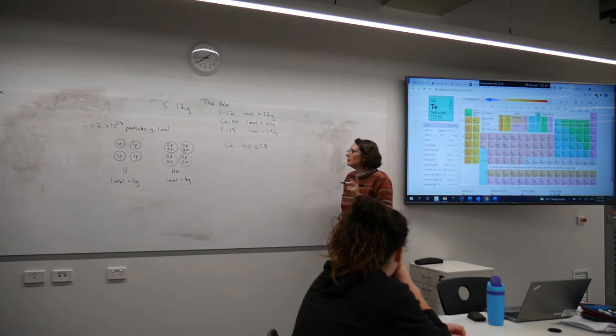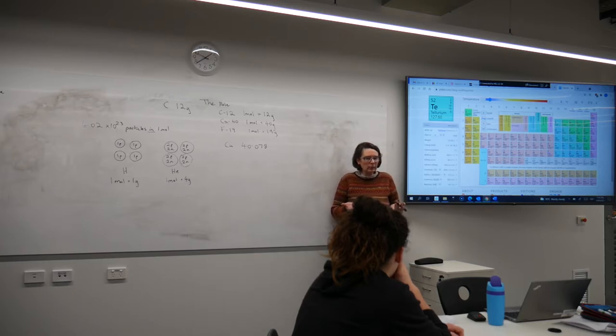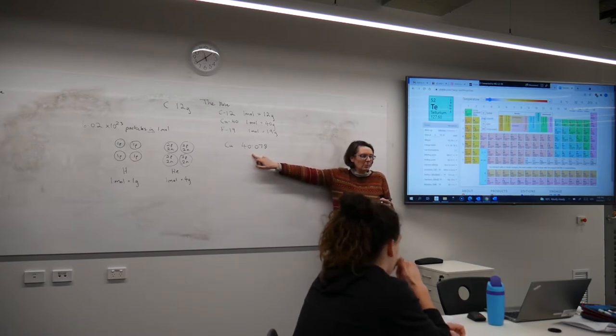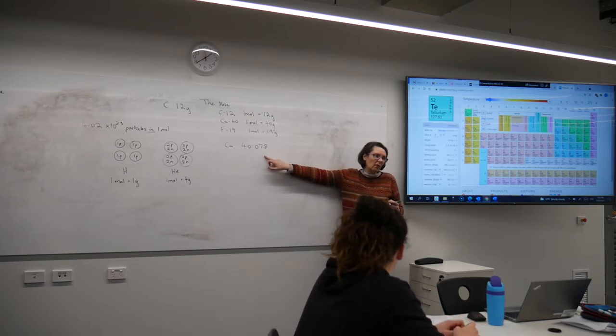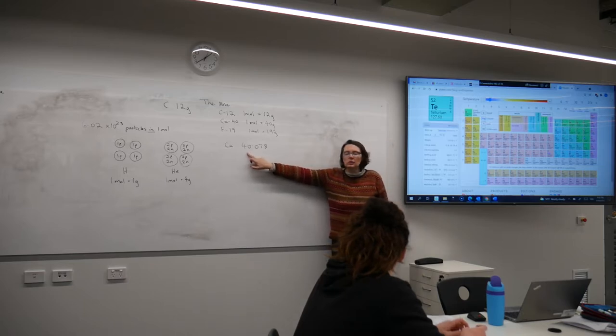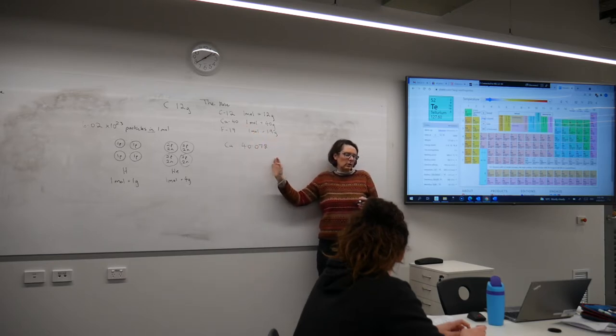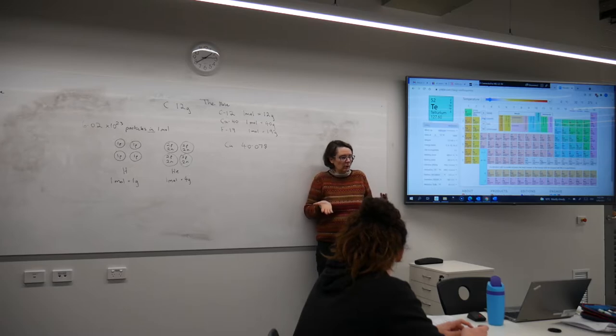That means if I have Avogadro's numbers worth of calcium atoms, some of them will have 20 neutrons, some will have 21, a small number will have 21, to give us this number here because it's not exactly 40. It's the relative atomic mass based on the abundance of the isotopes.